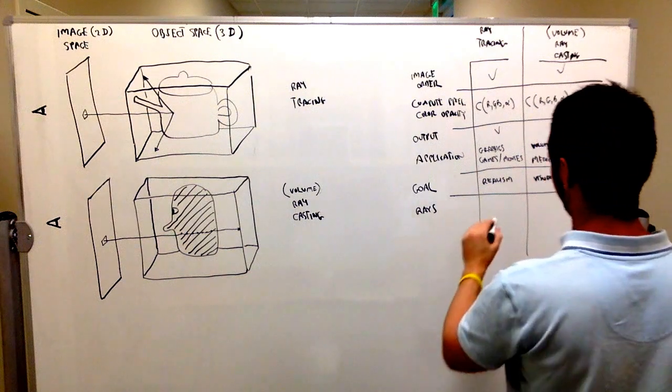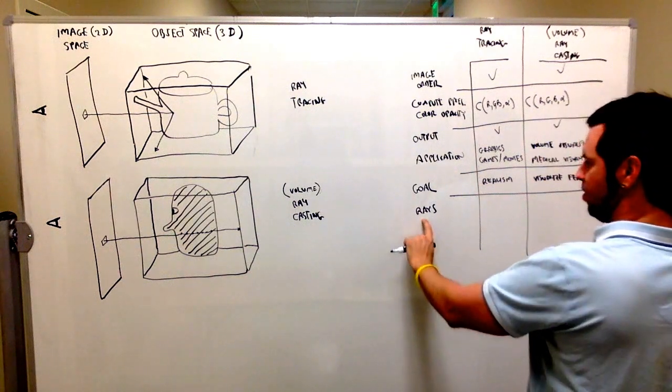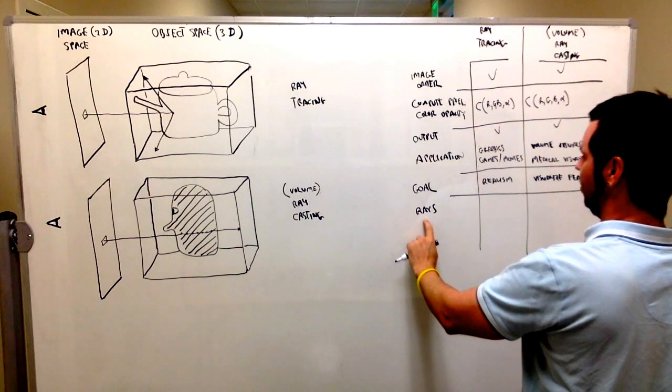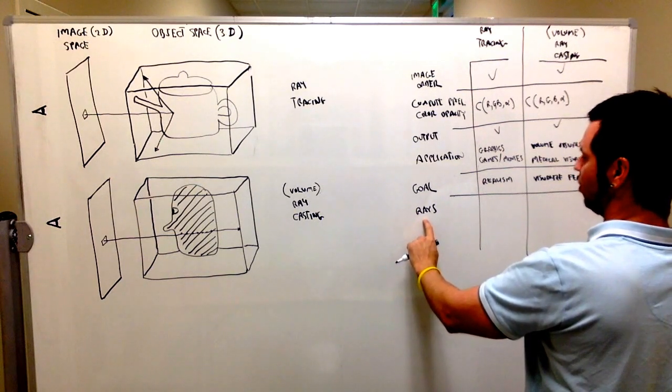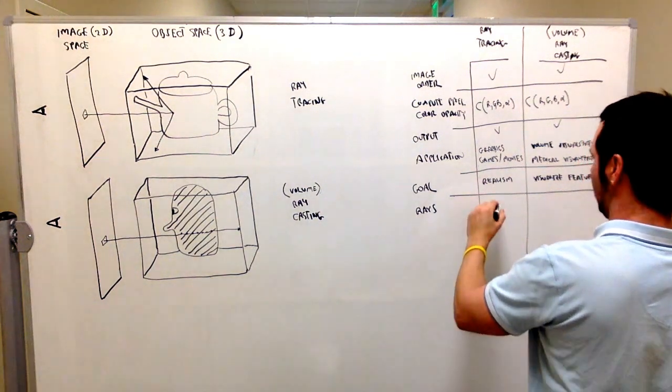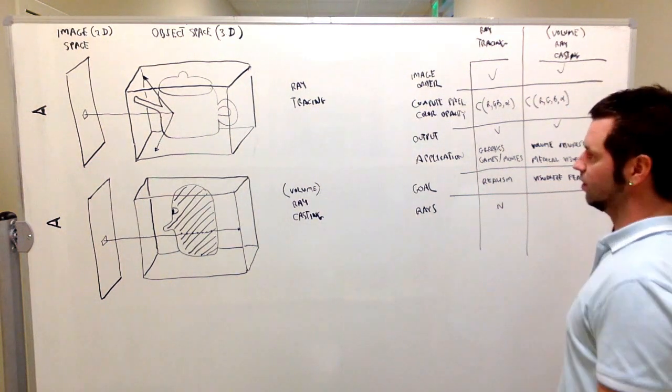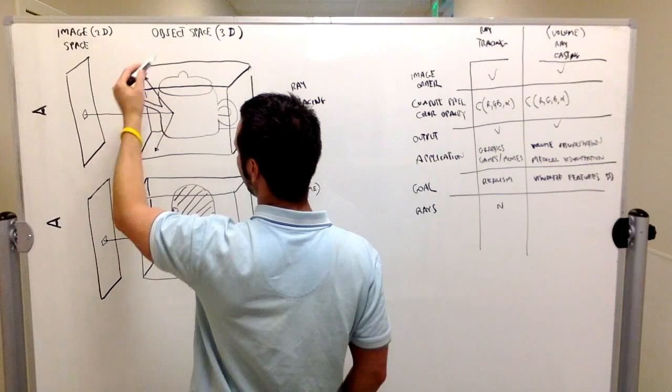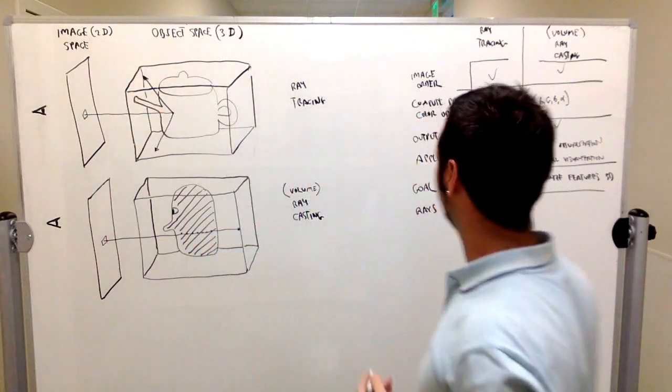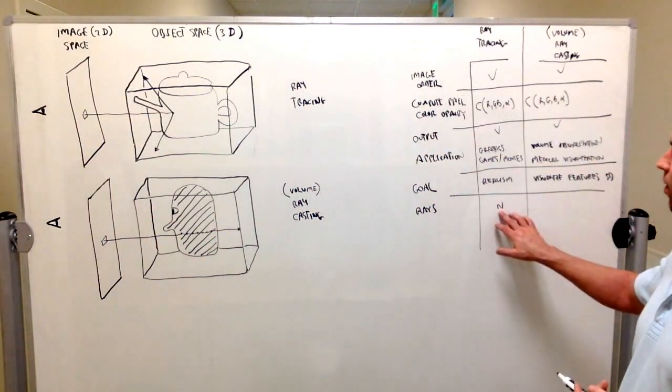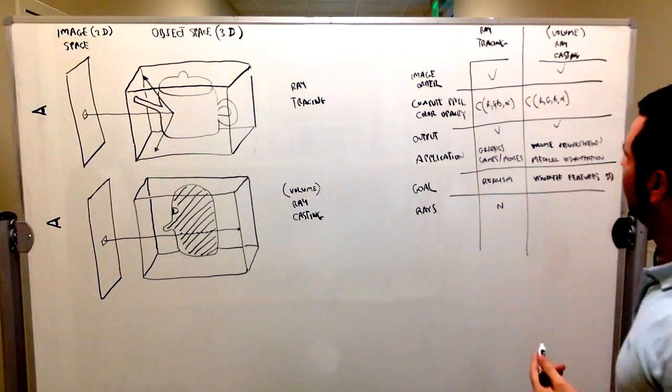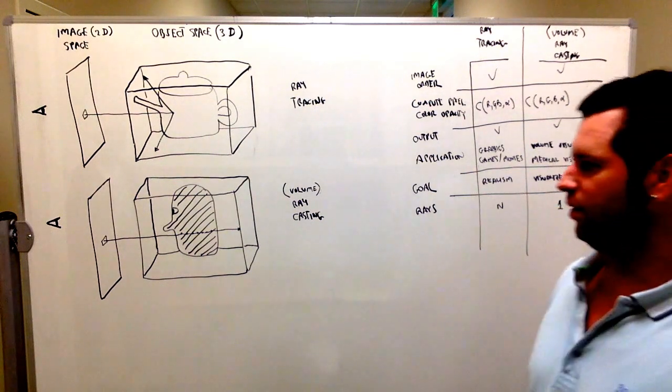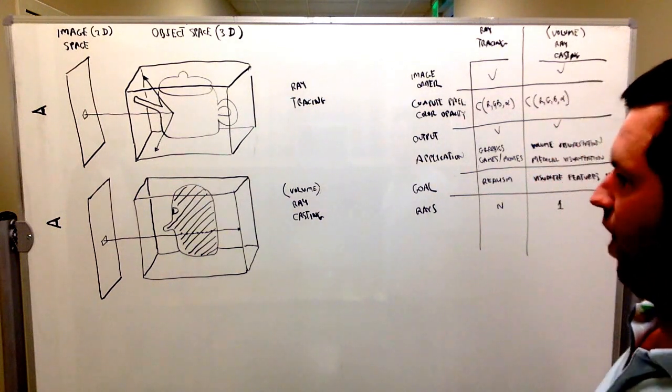The rays are different in volume ray casting and ray tracing. In ray tracing, there's an arbitrary number of rays. We have the so-called primary ray, but then we have secondary and tertiary rays—an arbitrary number of rays for each pixel. Whereas in volume ray casting, we generally have one ray per pixel, called the primary ray.